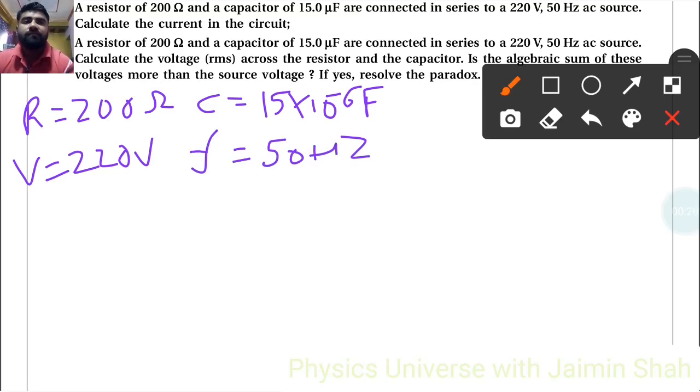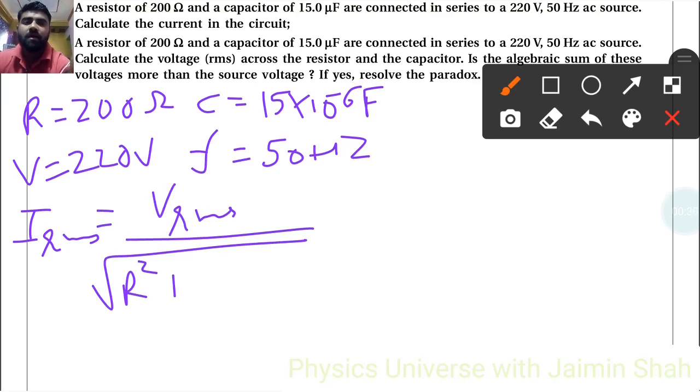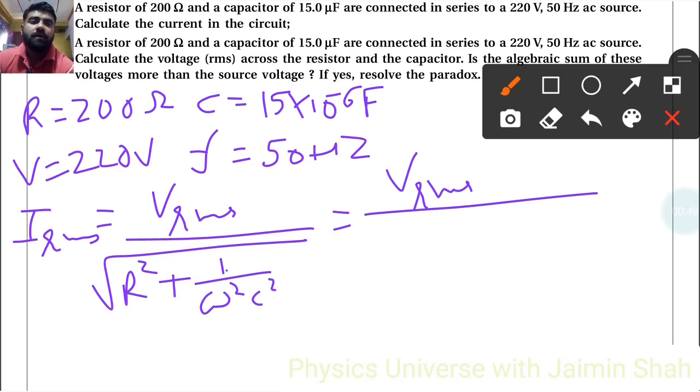Current formula: I_RMS equals V_RMS upon under root R square plus Xc square. Now Xc square formula is 1 upon omega square C square. So V_RMS upon under root R square plus 1 upon omega square C square. We don't have omega, so omega formula is 2 pi f.